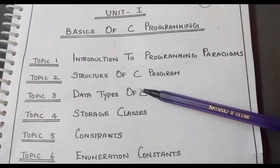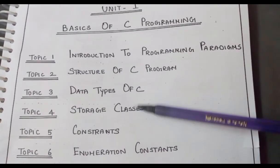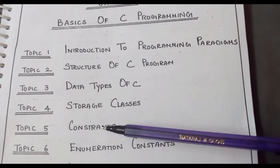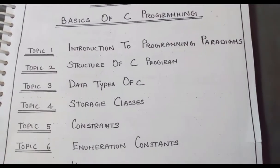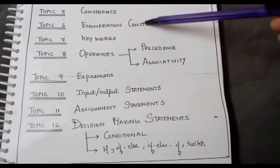Topic 3 is data types of C, topic 4 storage classes, fifth is constants, and topic 6 is enumeration constants.